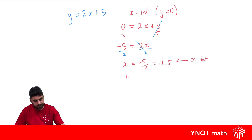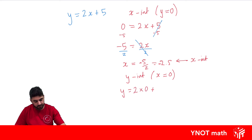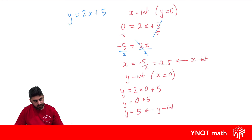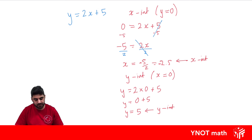What about the y-intercept? To do that, we just make x equal to 0. So y equals 2 times 0 plus 5. 2 times 0 is 0, and 0 plus 5 is 5. So y equals 5 is our y-intercept. In fact, whatever number is the constant term is always your y-intercept, because 0 times anything is 0, and you're always left with that term. So that's always your y-intercept.